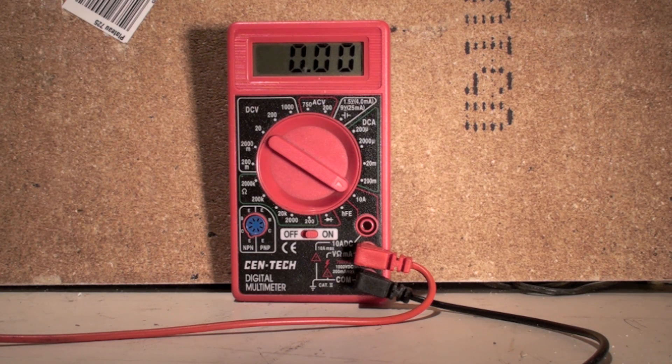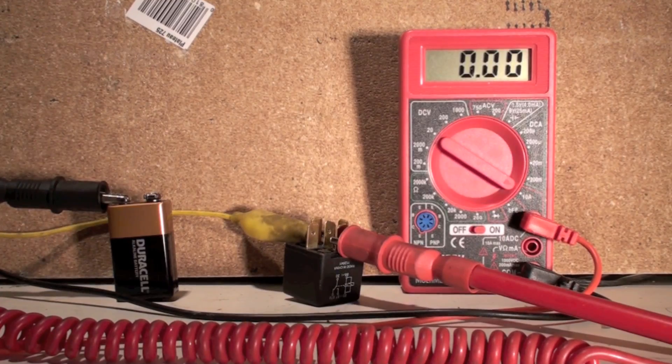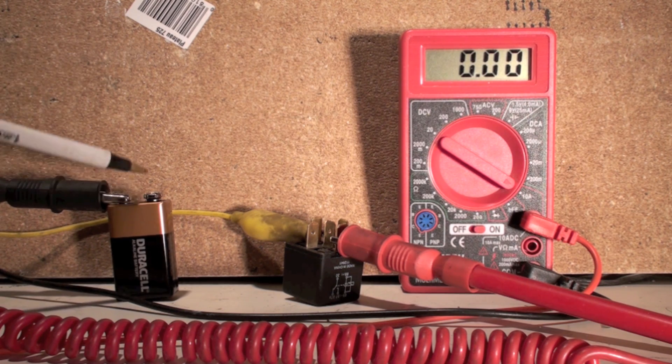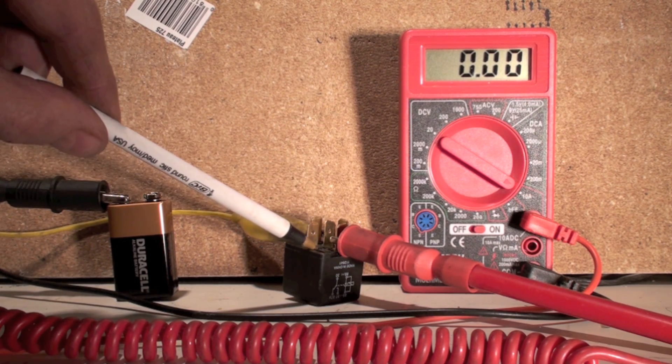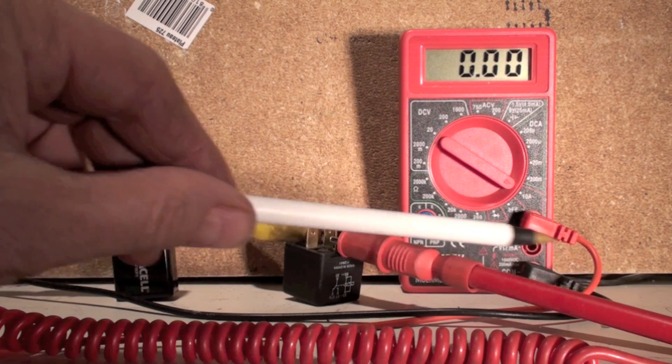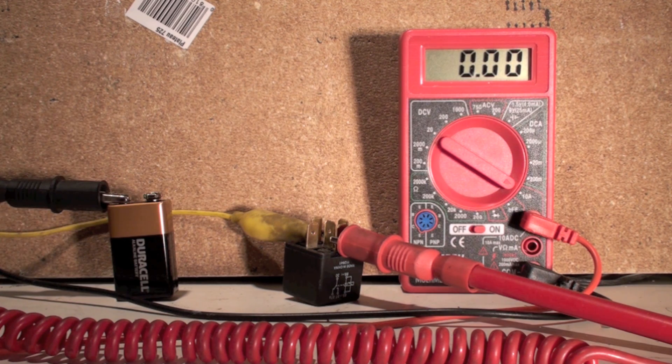Now we're set up with a nine volt battery here. We've got a little relay that we're testing. You can see I've got the red lead hooked to one side of this relay coil, and I've got the black lead coming from the meter going to the battery.